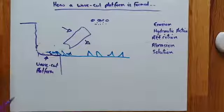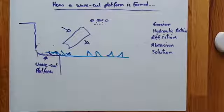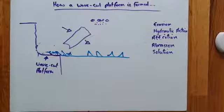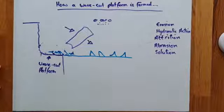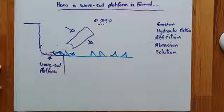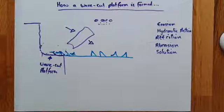And that, in its basic explanation, is how a wave-cut platform has formed. We'll talk more about it in class. Have a go drawing that diagram and explaining the sequence to somebody else. And I will see you soon. Thank you.